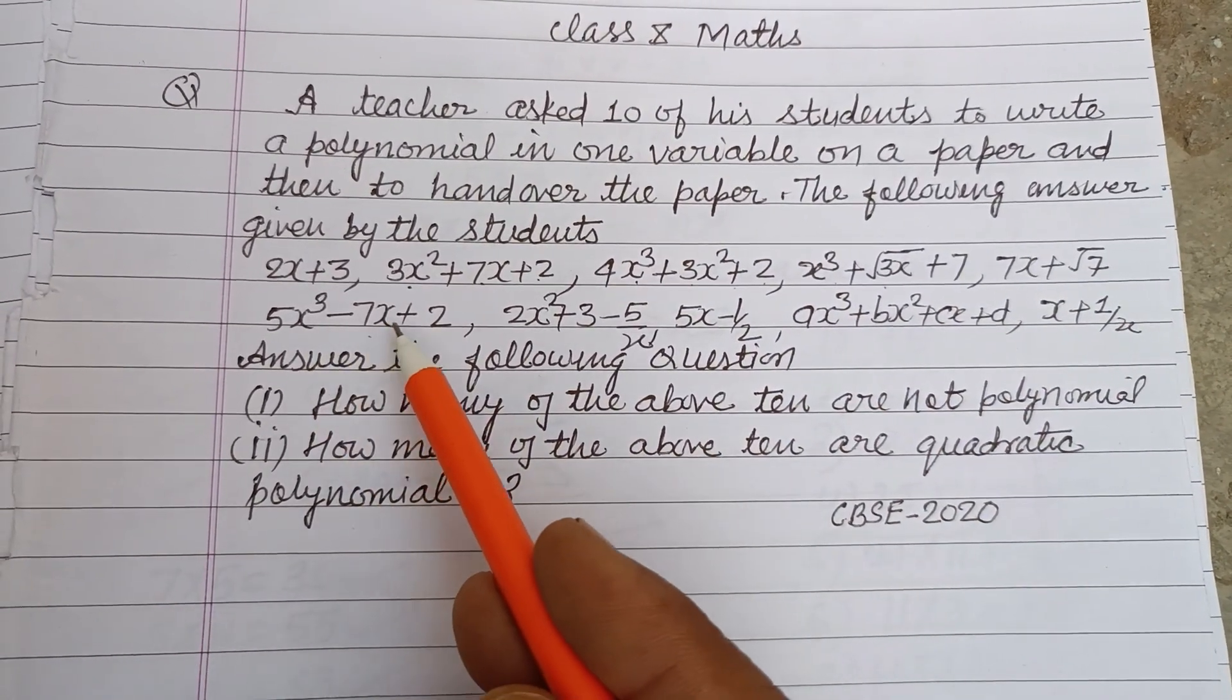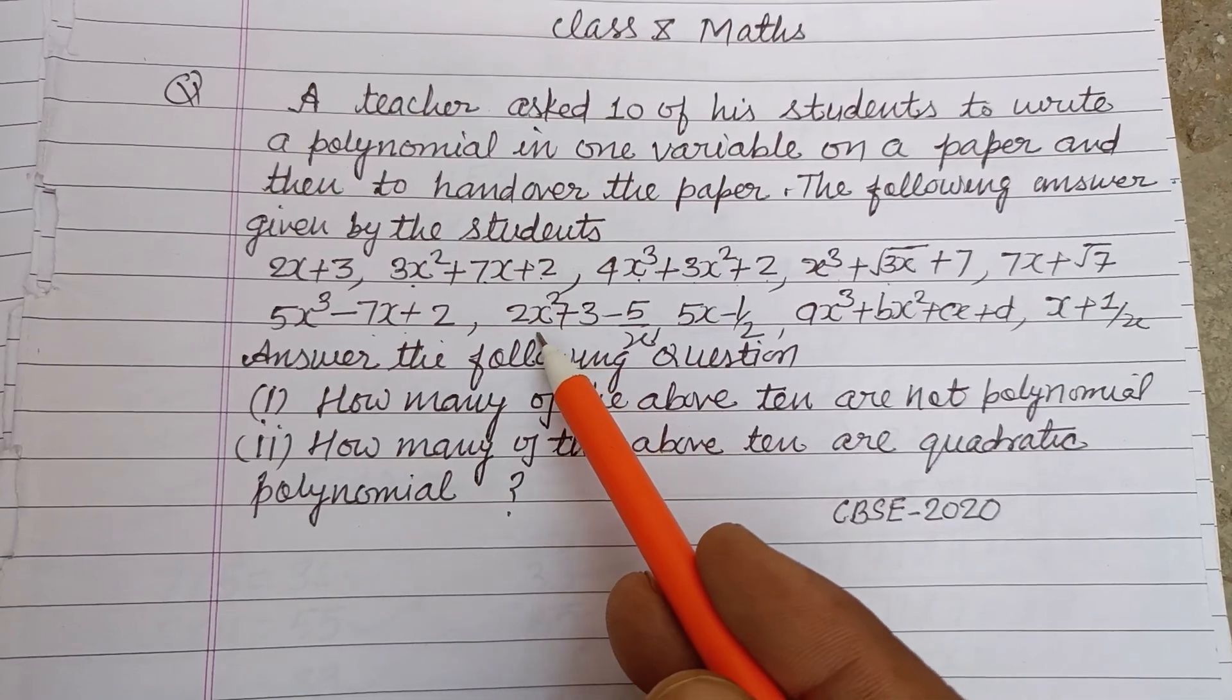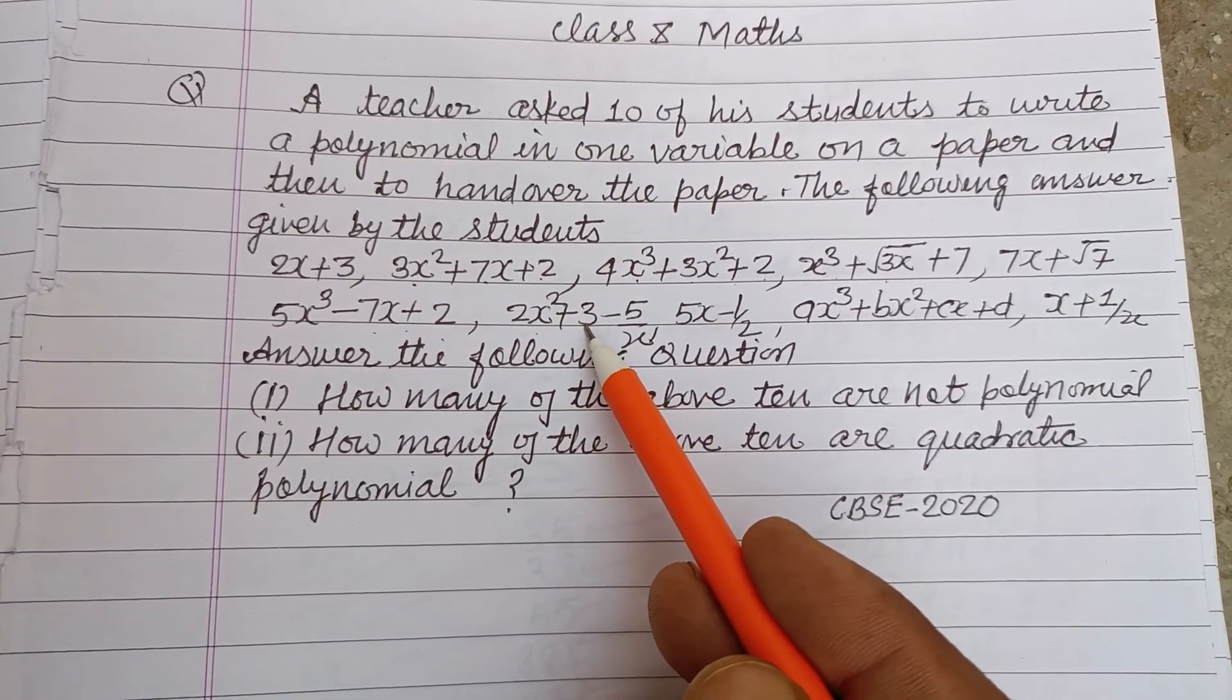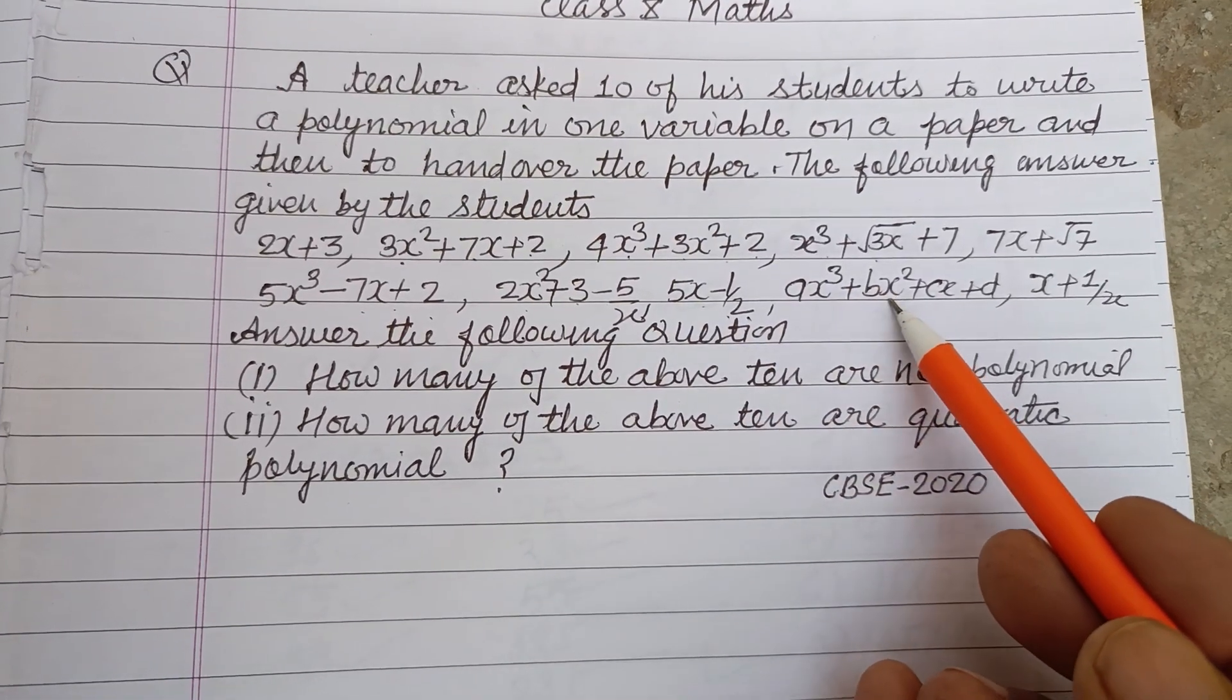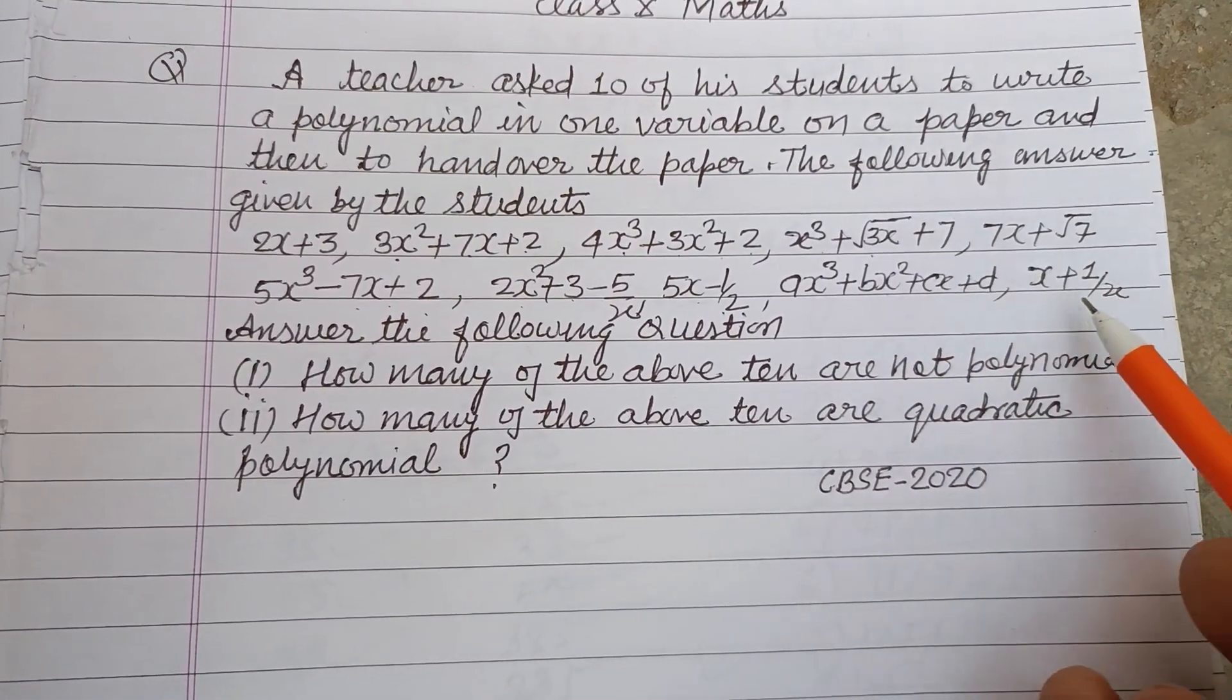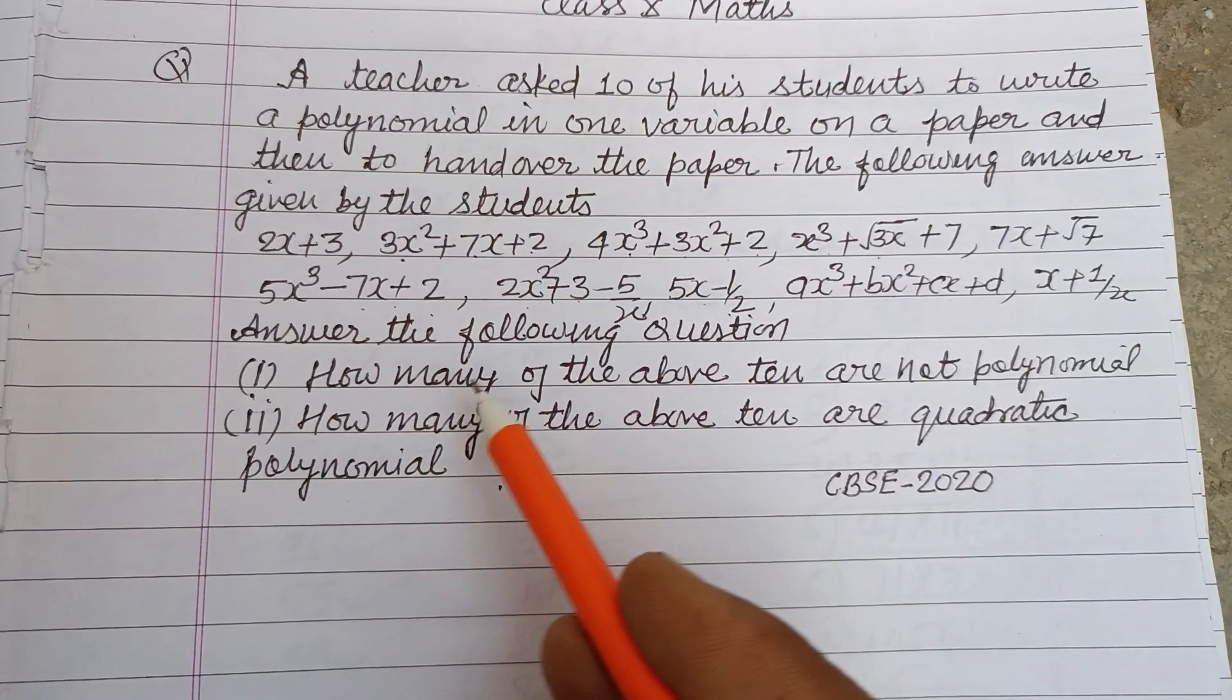5x³ - 7x + 2, 2x² + 3 - 5/x, 5x - 1/2, ax³ + bx² + cx + d, and x + 1/x. Answer the following questions.